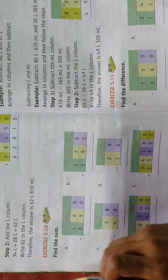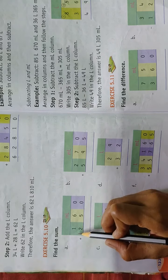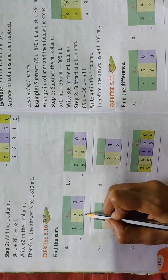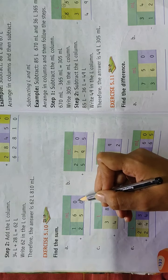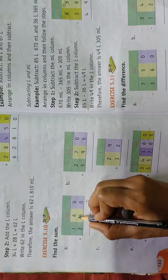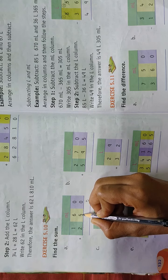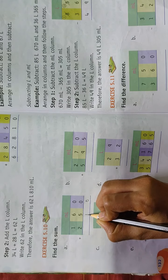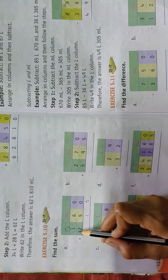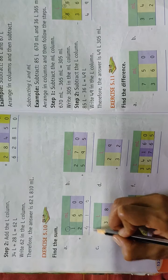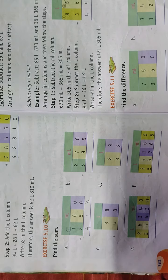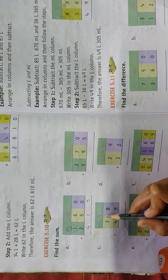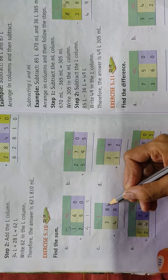Now we'll start Exercise 5.10 — find the sum. First: 160 ml + 250 ml. Starting from the ones column: 0 + 0 = 0. Then 6 + 5 = 11, so write 1 in the answer place and carry 1 over. Then 1 + 2 = 3, plus 1 carry = 4. The answer is 410 milliliters.